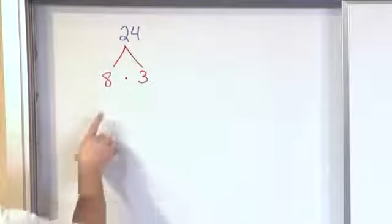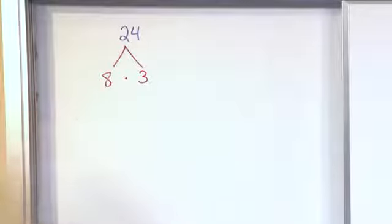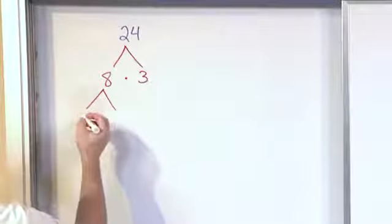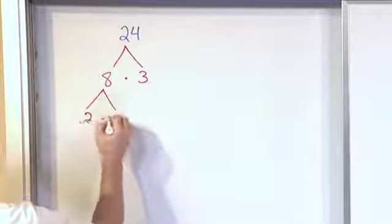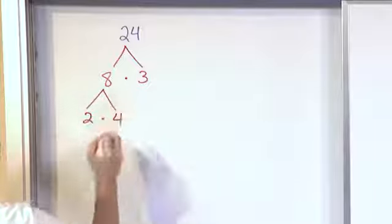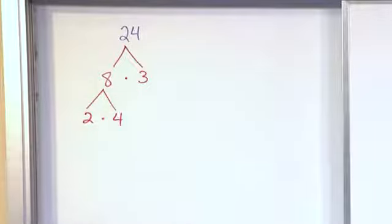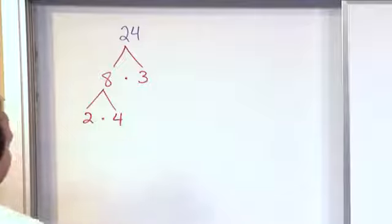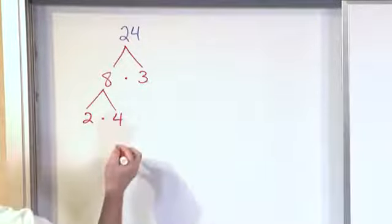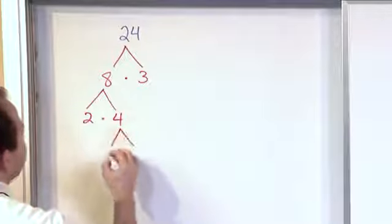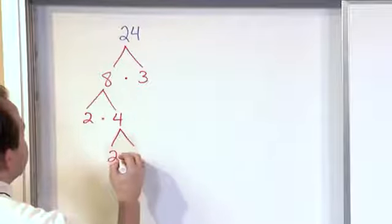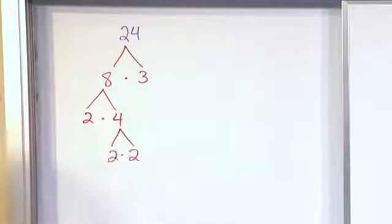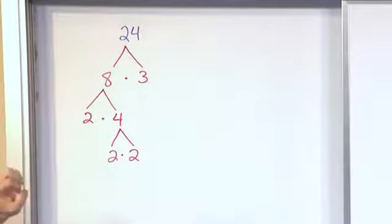Now the next thing you do is look at 8. Let's go with 2 times 4, because 2 times 4 gives me 8. Now let's look at the 4. Do I have any two numbers that can multiply together to give me 4? Of course — 2 times 2 gives me 4. Now we've built a factor tree.